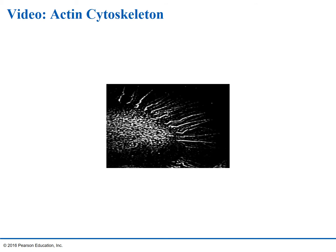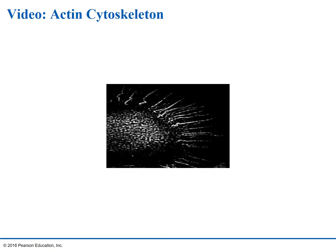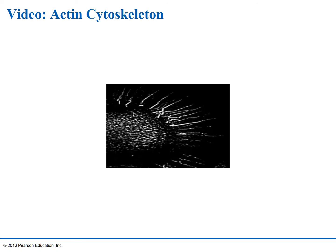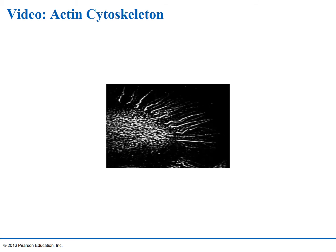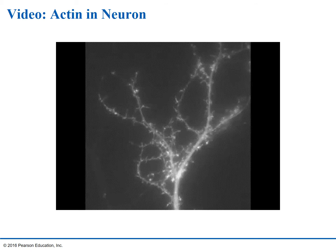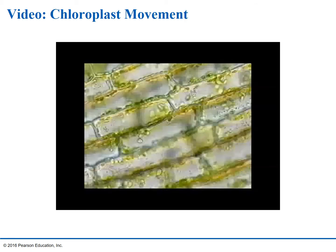In this video, they're going to show us actin, which is one component of the cytoskeleton that has those motor proteins to help with movement. It kind of looks like a stream of lines coming towards some mass in the center. The next one is a video of actin again, but this time in a neuron. Now we're moving on to look at the movement of chloroplasts in a plant cell.